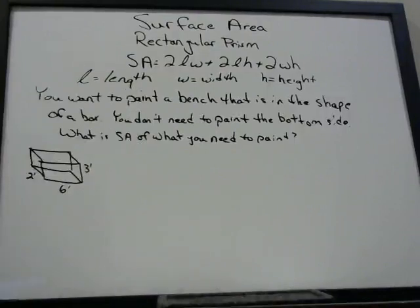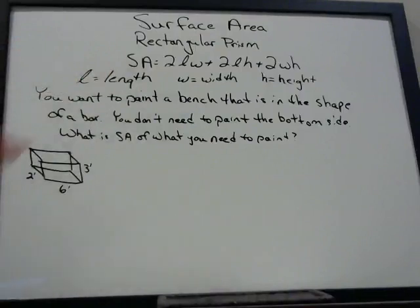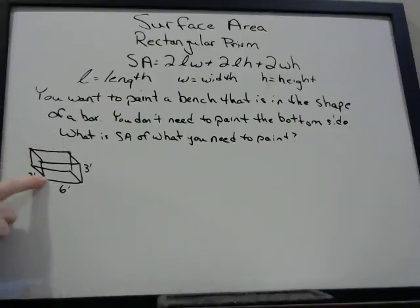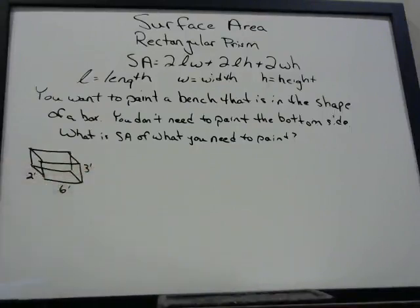Here's a word problem to test if you really understand what's going on in this formula. You want to paint a bench that's in the shape of a box or a rectangular prism. You don't need to paint the bottom side, because it's going to be laying on the ground. So what is the surface area of what you do need to paint? The dimensions are: length is 6 feet, width is 2 feet, and height is 3 feet.